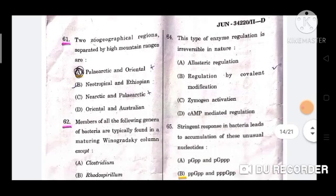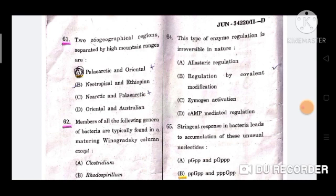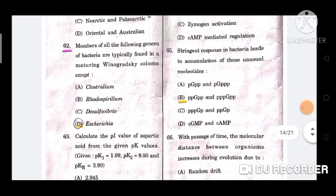Question number 61: Two zoogeographical regions separated by high mountain ranges are? Option is A, Palearctic and Oriental. Next question, question number 62: Members of all the following genera of bacteria are typically found in a maturing Winogradsky column except? Option is D, Escherichia.